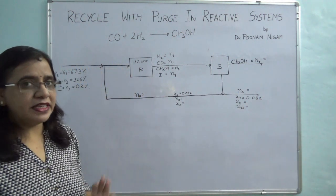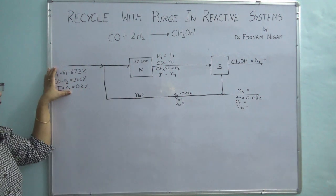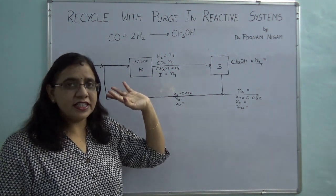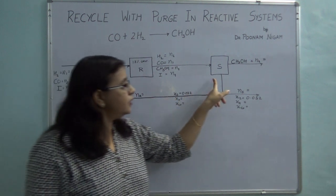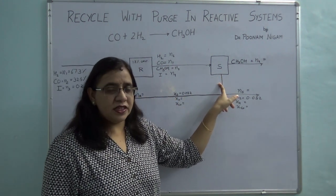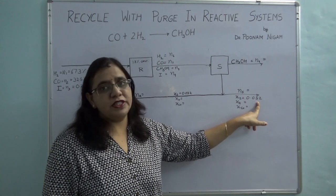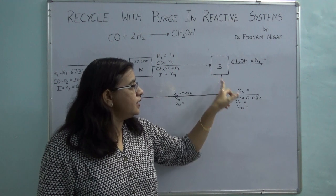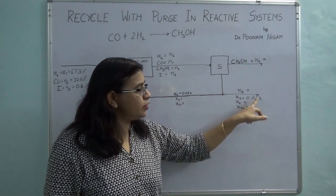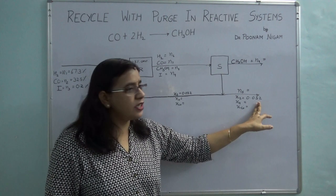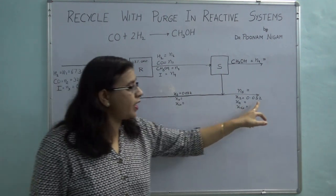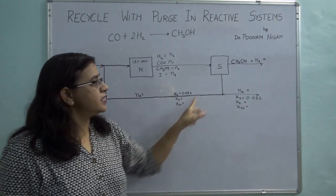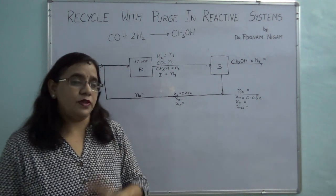Now, the things that are given: first, the composition of the fresh feed; second, the 18% conversion in the reactor; and third, the outlet from the separator cannot have more than 3.2% inert. Since the stream from the separator splits into two, the concentration in all three streams will be the same — so the inert concentration in both the purge stream and recycle stream is also 3.2%.